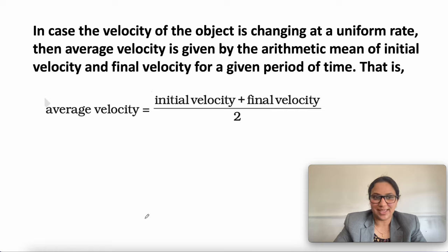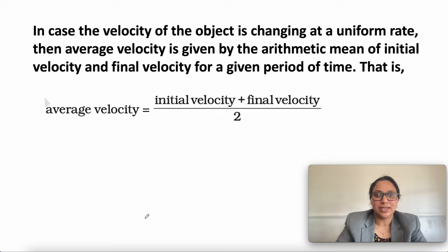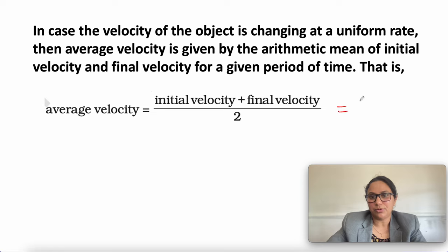Average velocity can also be calculated as the arithmetic mean of initial and final velocity for a given period of time. So average velocity equals initial velocity plus final velocity divided by 2, or (U + V) / 2.